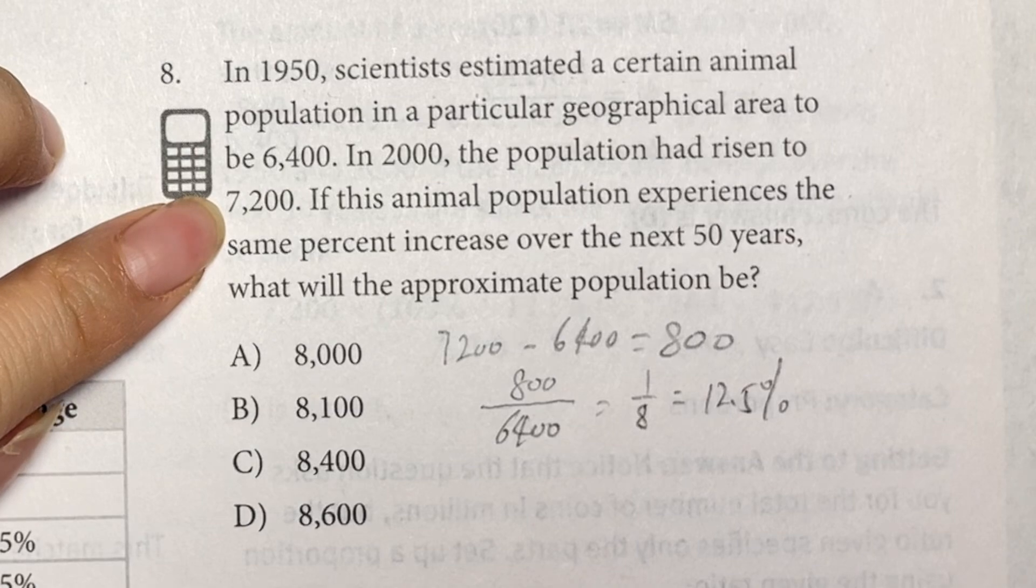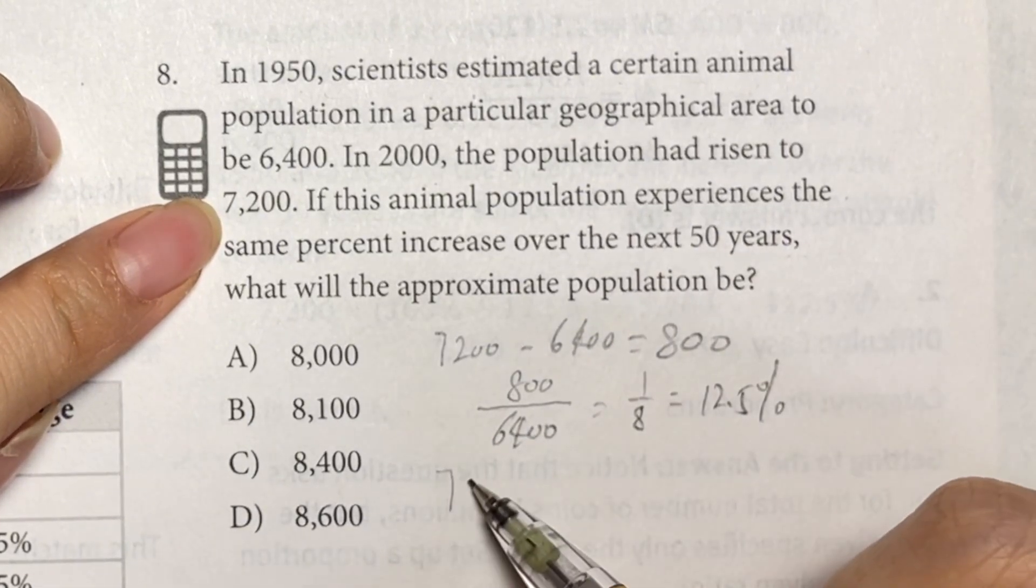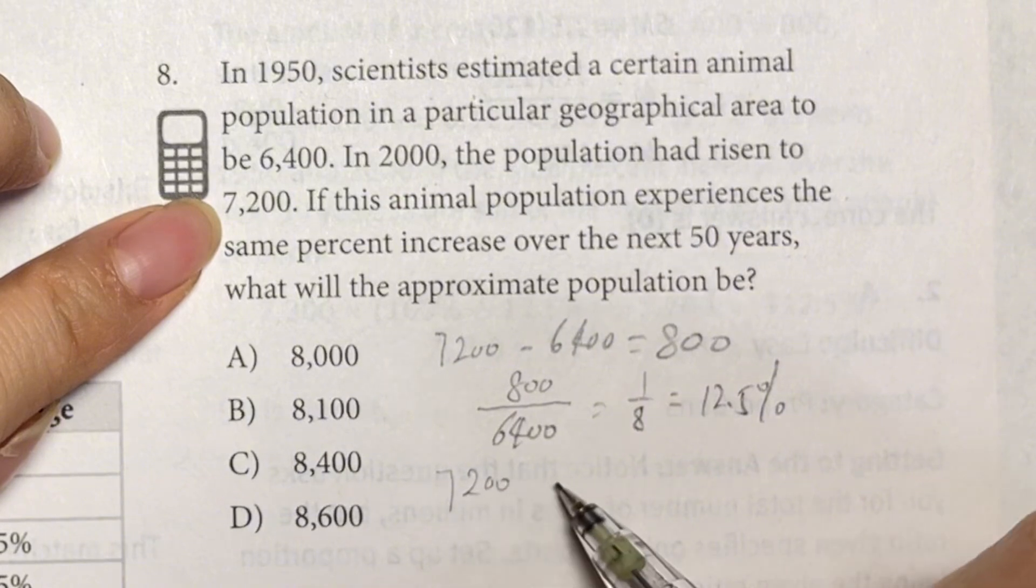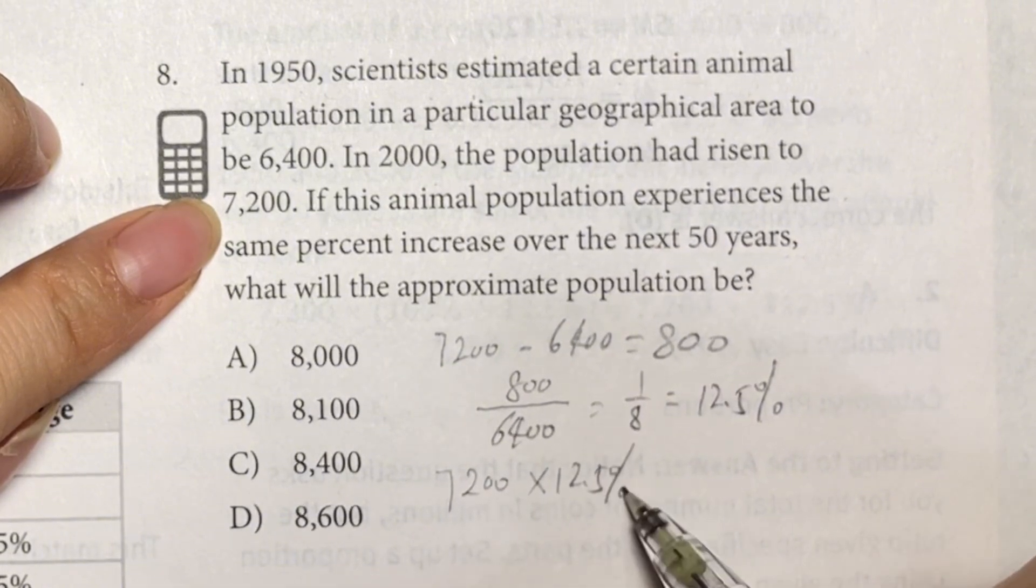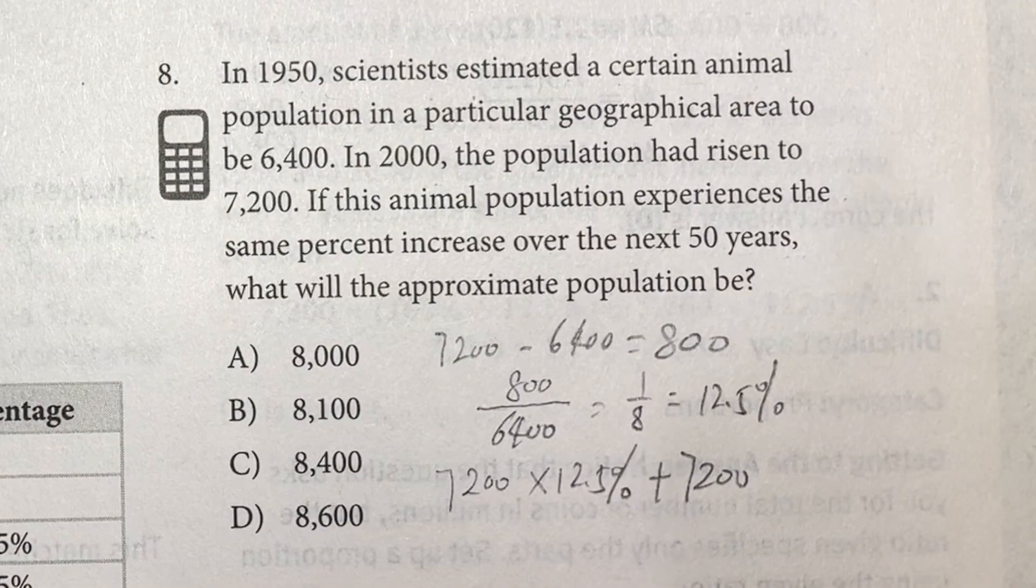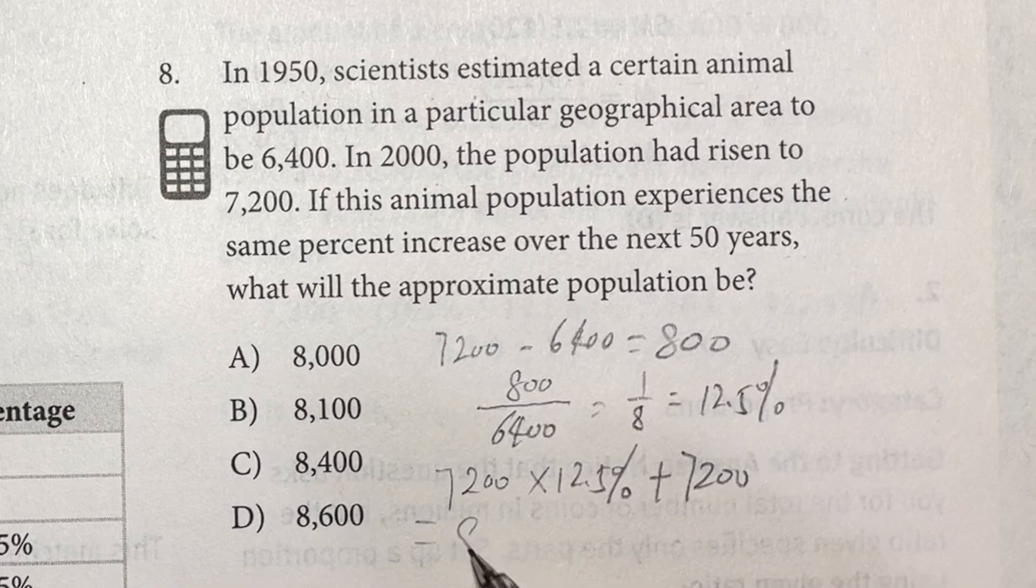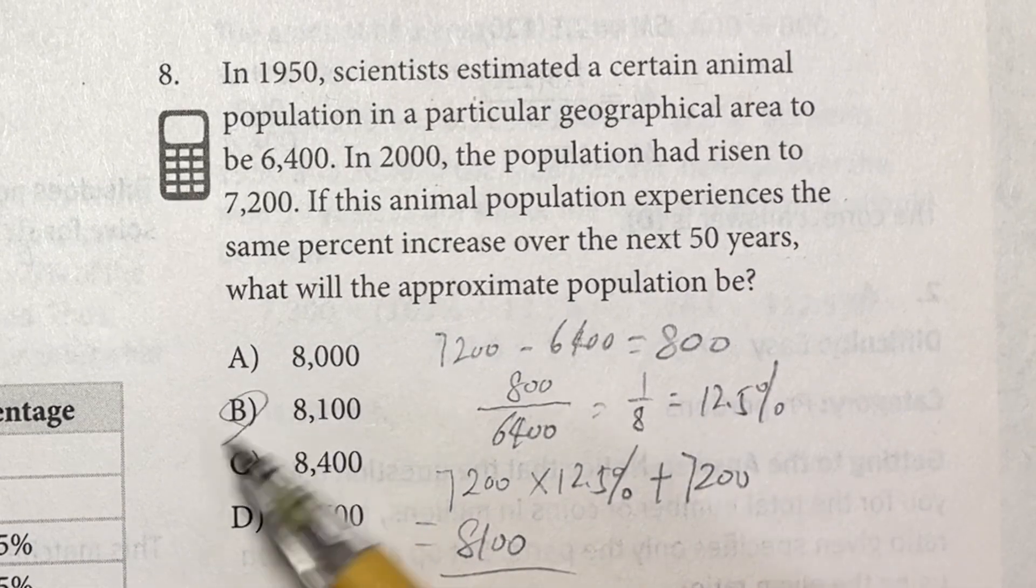Then how can we calculate for the next 50 years? We use 7,200 times 12.5 percent plus 7,200. So this calculates to 8,100. So B is our answer.